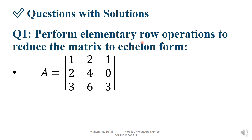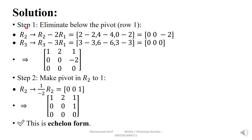Solution 1: Perform elementary row operations to reduce the matrix to echelon form. Matrix A is given. Step 1: Eliminate below the pivot. Apply R2 = R2 minus 2*R1, meaning subtract the first row multiplied by 2 from the second row. We simplify and get: 2 minus 2 equals 0, 4 minus 4 equals 0, and we get this answer.